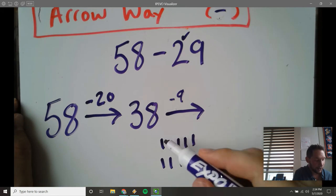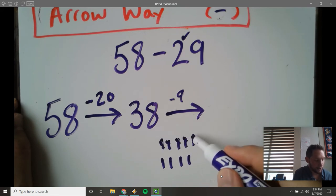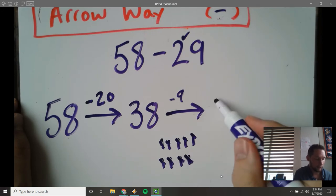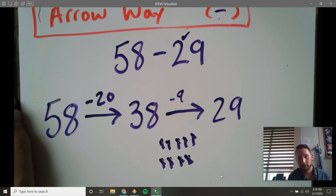Okay, 38, 37, 36, 35, 34, 33, 32, 31, 30, 29. There's my answer. Okay, I can do it a different way.